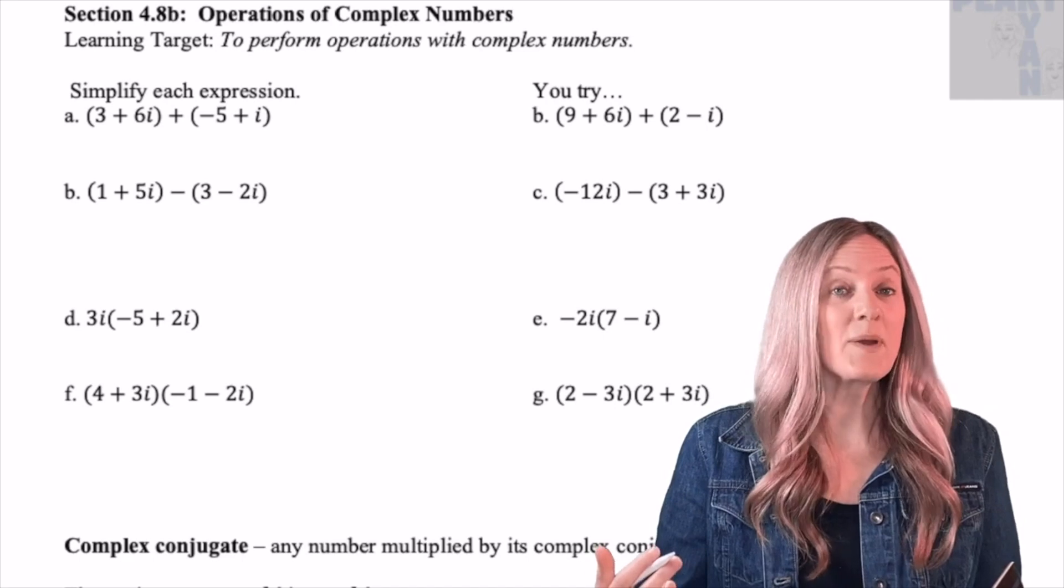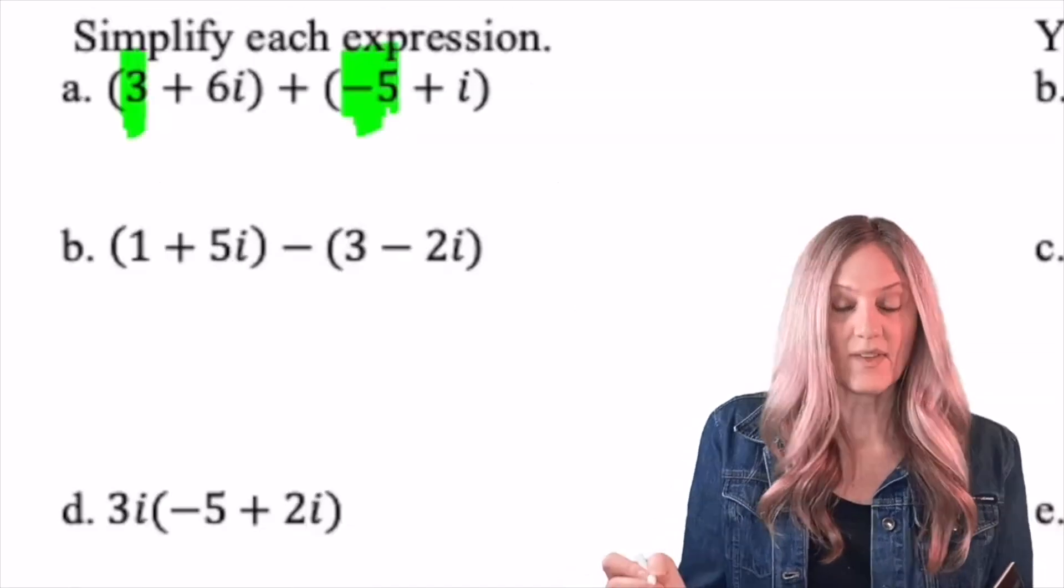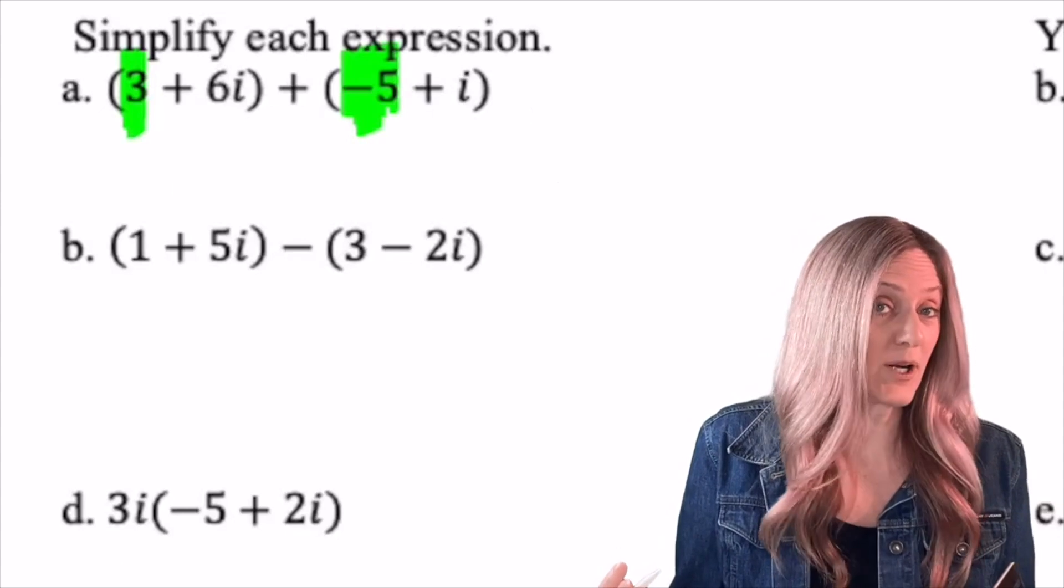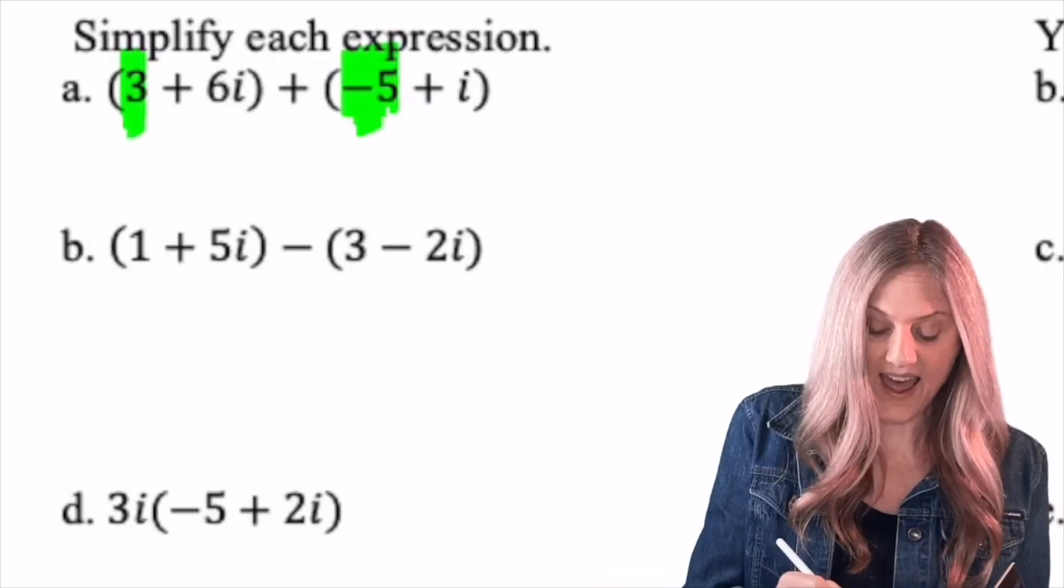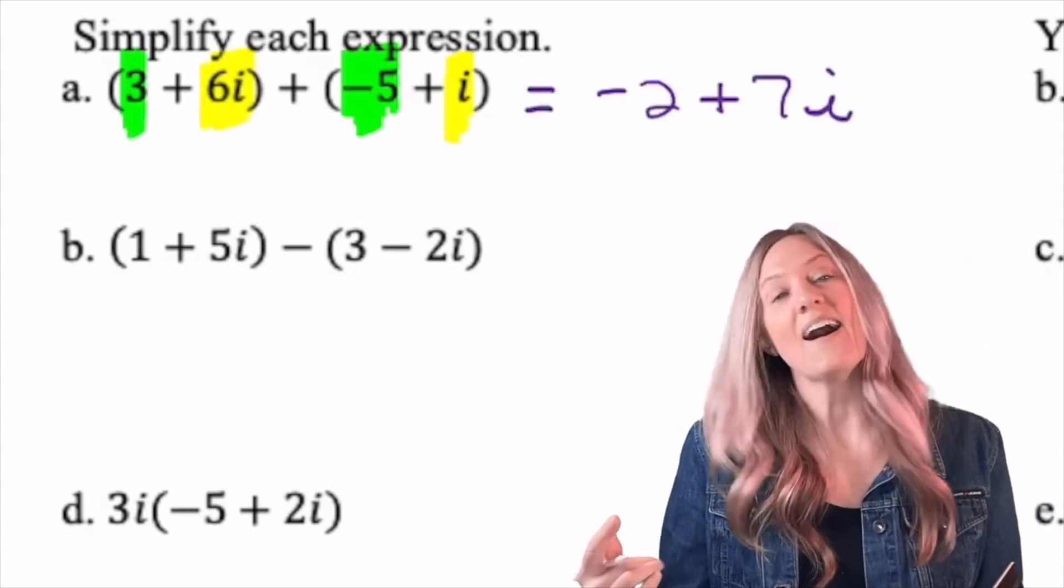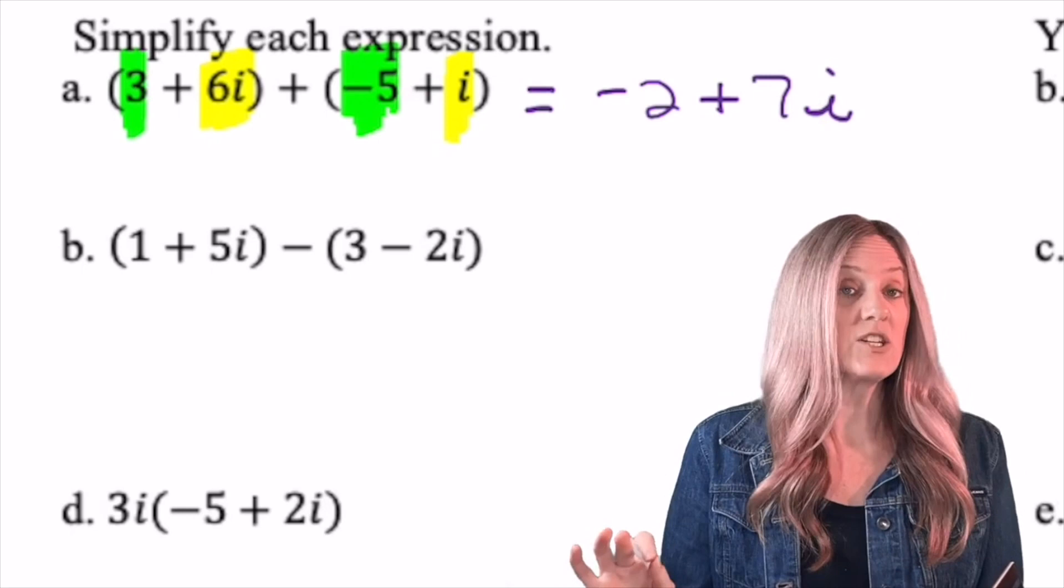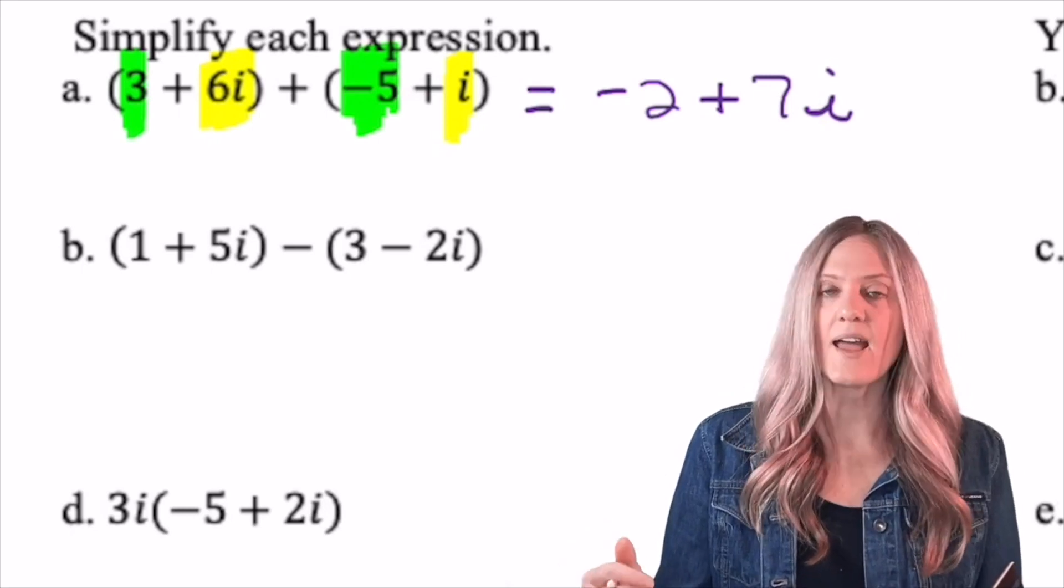Now that we know about complex numbers, we can add, subtract, and multiply them. Let's look at example a. I simply add the real number components and then add the imaginary components. Be careful. i is really 1i, so 6i plus i is 7i. Be sure to maintain the proper formatting, a plus bi.